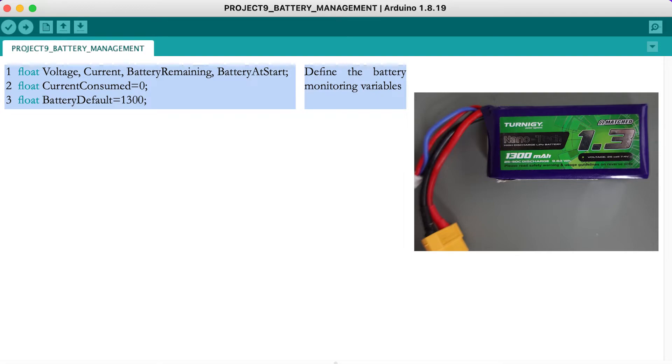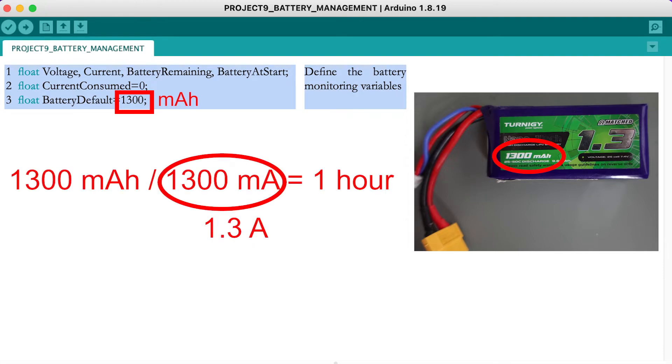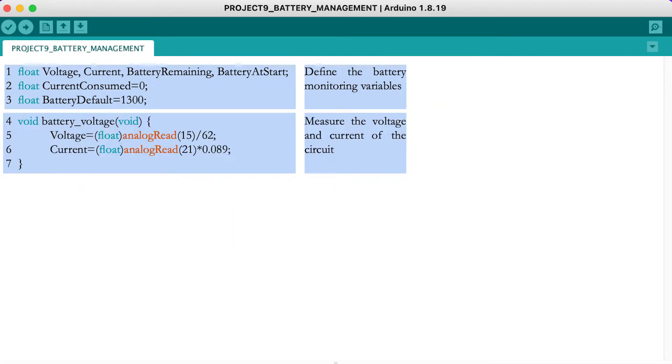The battery used for this project is a 1300 mAh battery. This means that a current of 1.3 amps can be sustained for 1 hour. In part 3, you already learned how to measure the voltage.